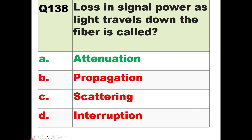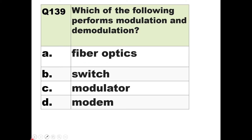Question 139: Which of the following performs modulation and demodulation? Fiber optic is a cable and does not perform modulation. Switch is just on/off. Modulator does only modulation. A modem — where 'mo' stands for modulator and 'dem' for demodulator — performs both modulation and demodulation. So the answer is option D — modem.